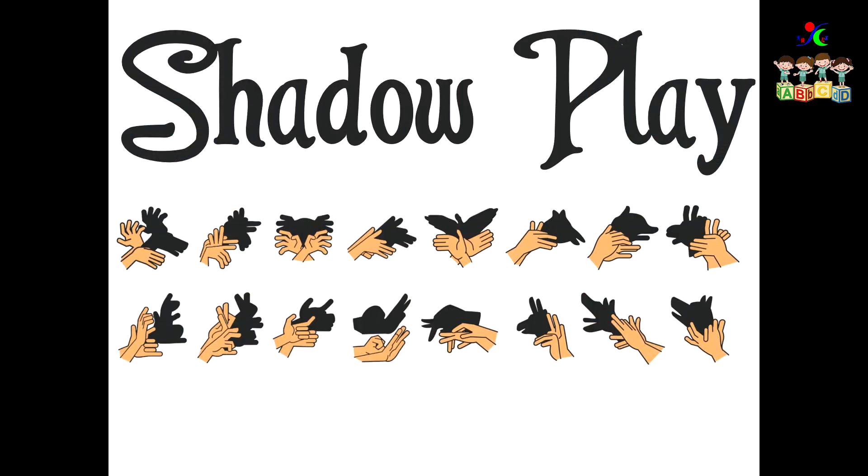Now that we know the different parts of our hands, we can make shadow animals. You will need a dark room with a blank wall, a light source like a flashlight, and maybe some help from your mom or dad.